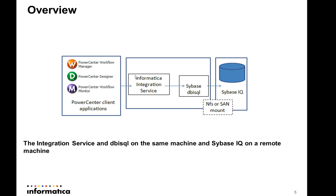The other option is to keep Informatica Integration Service and Sybase DBI SQL client on one machine and have the Sybase IQ server on a remote machine. For Informatica to write the staging file, we need a common mount — either NFS or SAN — where both machines can access it. In this case, we do not have the option to use a pipe to load data into Sybase IQ.